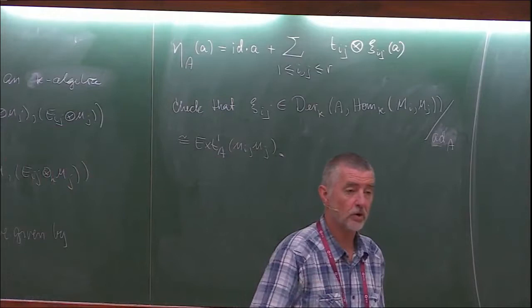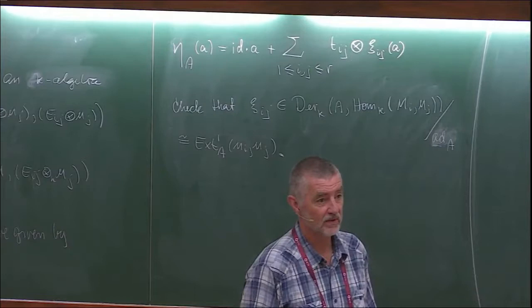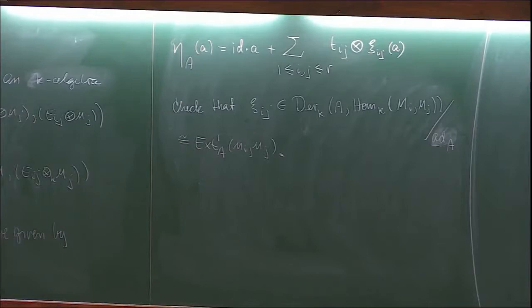Conversely, given any matrix — I can put an arrow the other way — because given such derivations I can just define η this way and prove that this morphism will be a K-algebra homomorphism. The only check is the associativity, but that is okay because then we get multiple variables and they disappear, so it will be associative. That is why we call def_M(E) the tangent space — that is also Schlesinger's definition. The deformation functor of the dual numbers is a tangent space.